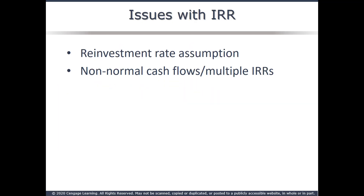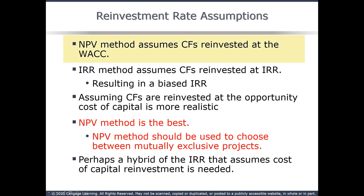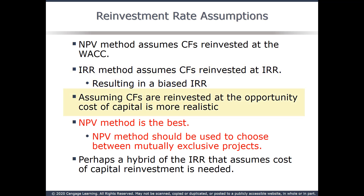The IRR methodology has two serious issues: the reinvestment rate assumption and multiple IRRs when you have non-normal cash flows. NPV assumes reinvestment of inflows at the cost of capital, while IRR assumes reinvestment at the internal rate of return. If the internal rate of return is 25%, inflows are reinvested at 25%, which probably overstates the return. Reinvestment at the cost of capital, a market rate, is more realistic. NPV should always be used to choose between mutually exclusive projects.